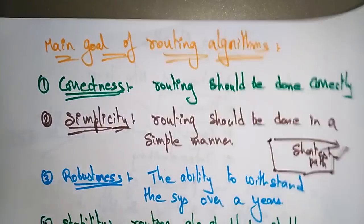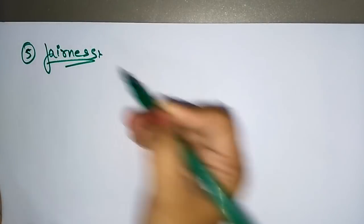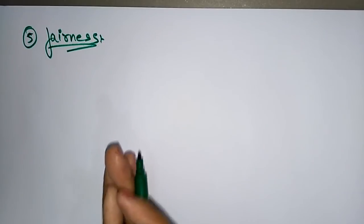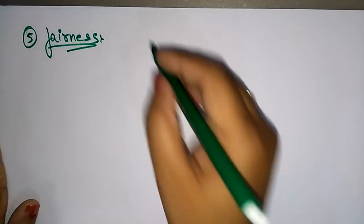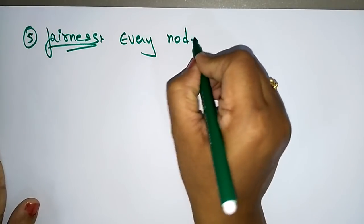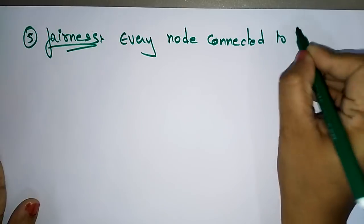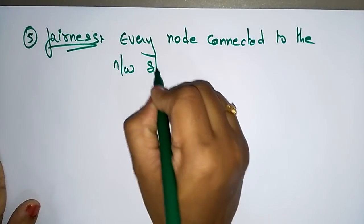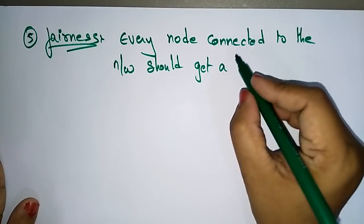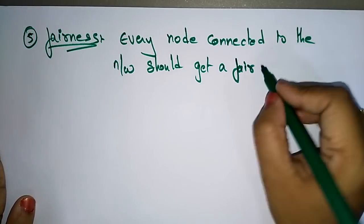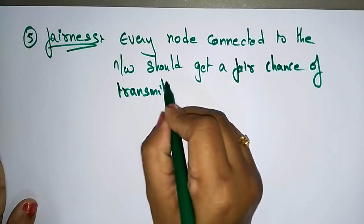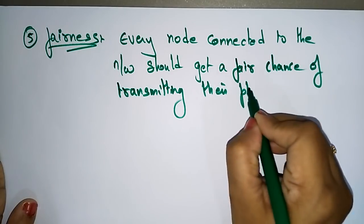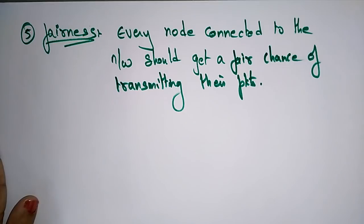The fifth goal is fairness. Every node connected to the network should get a fair chance of transmitting its packets. All nodes connected over a network must have an equal opportunity to transmit their data.